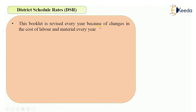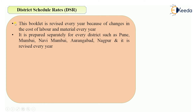This booklet is revised every year because there are changes in the cost of materials and cost of labor every year. For example, there will be a separate DSR for 2018-2019 and a separate DSR for 2019-2020. As the name says, District Schedule Rates, it is prepared separately for every district, such as Pune, Mumbai, Navi Mumbai, Aurangabad, and Nagpur, and it is revised every year.